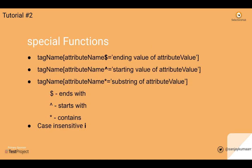There are special functions in CSS selector as well, which you might not have seen in XPath — like dollar, caret, and star. These are really good functions. Dollar means ends with the attribute value, caret means starts with, and star means contains.